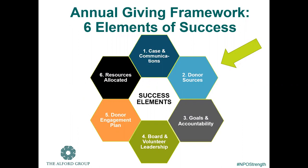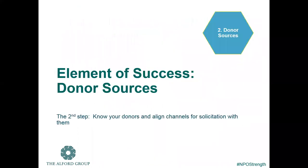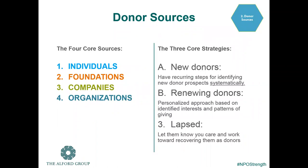Next we'll take a look at donor sources needed for an annual giving program. In this step, we're looking at how you know your donors and align the channels for solicitation with them. The four core sources of support for your annual giving program can include individuals, foundations, companies, and organizations. In some cases, you may also add government to that list. The three core strategies are identifying new donors, renewing donors with a personalized approach based on identified interests and patterns of giving, and recovering lapsed donors by letting them know you care.